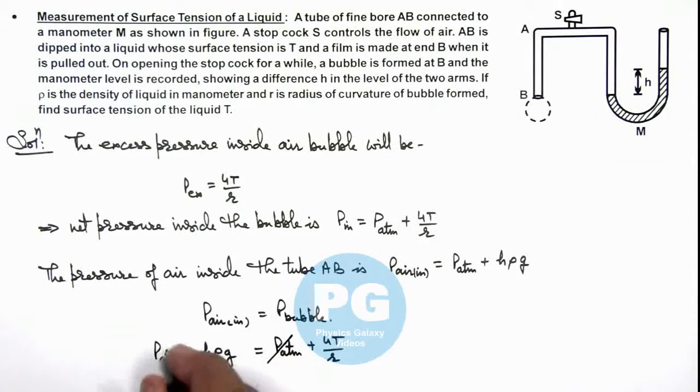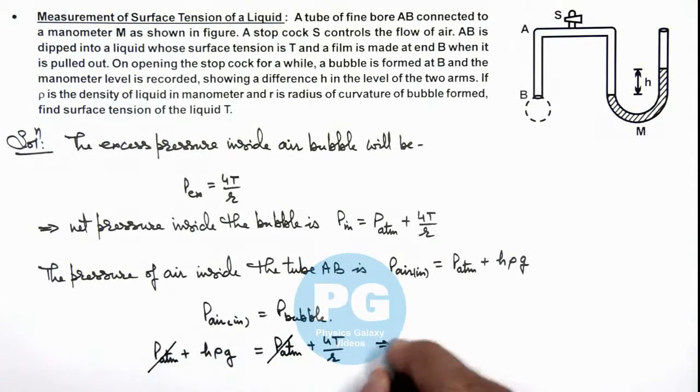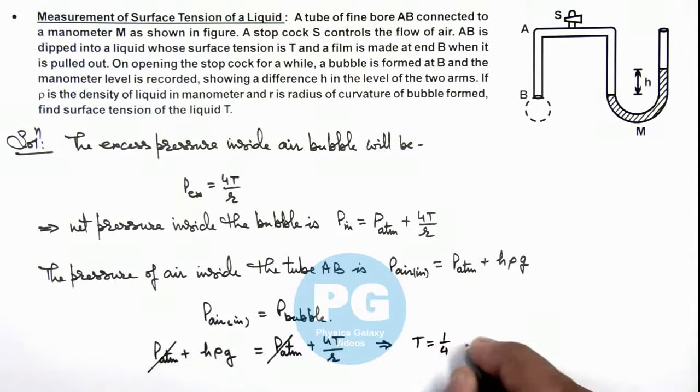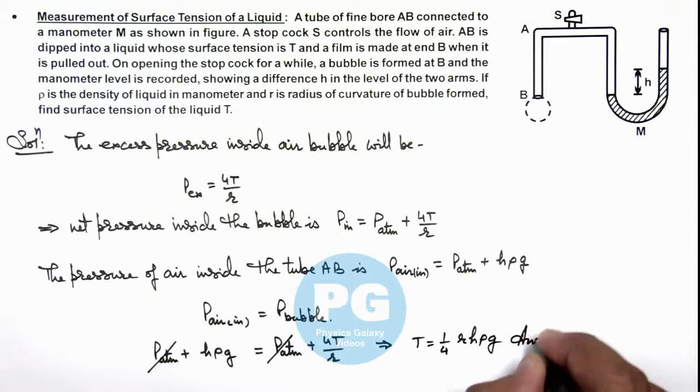And this will give us the value of T as one by four times rhρg, that is the result of this problem.